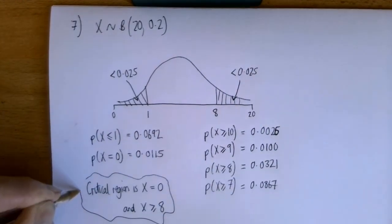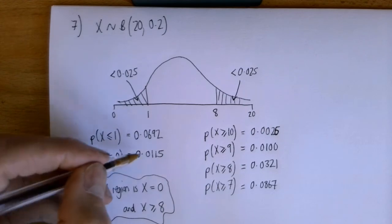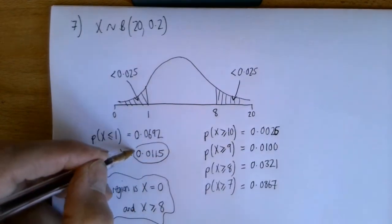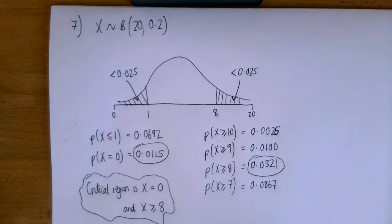In part B, we're asked for the actual significance level. So that means we add that probability and that probability and that probability together, then turn that into a percentage.